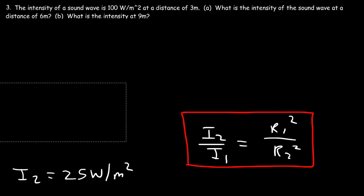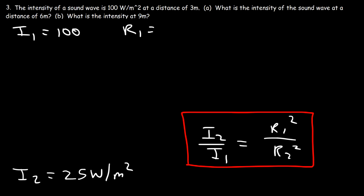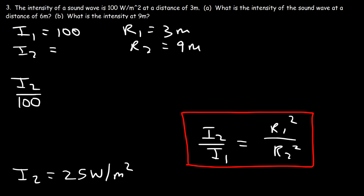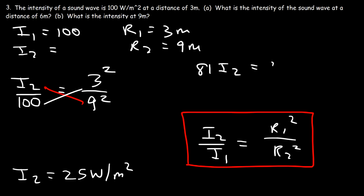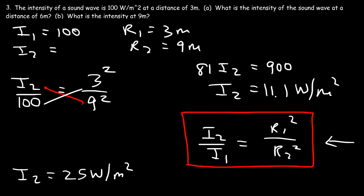For part b, I₁ is still 100 and r₁ is still 3 meters, but now r₂ is 9 meters. So I₂/100 = 3² / 9². Cross-multiplying: 81 × I₂ = 100 × 9 = 900, so I₂ = 900/81 = 11.1 watts per square meter. That's how you find the new intensity at a different distance using the inverse square law formula.